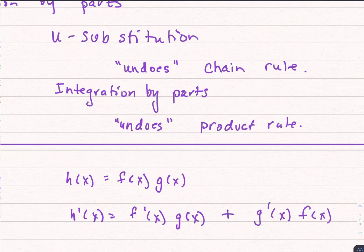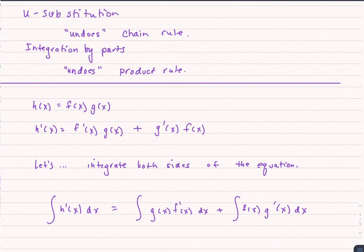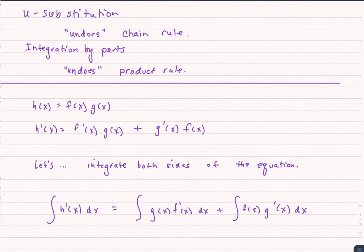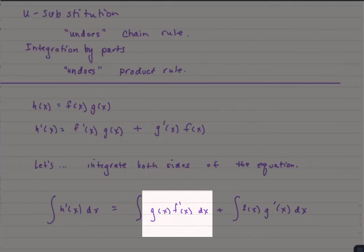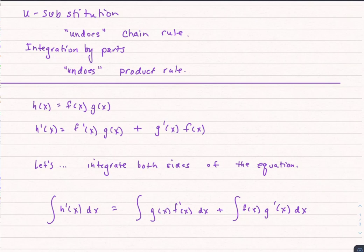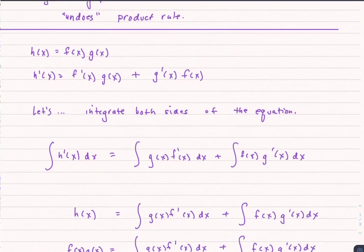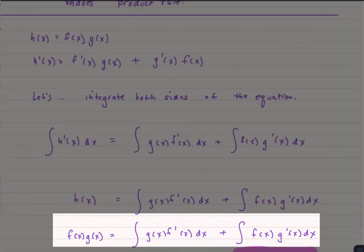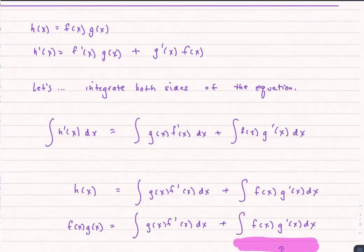Let's do something strange. Let's integrate both sides. So if I integrate h'(x), I've got that, and then I'm going to have the integral of g(x) f'(x) dx and the integral of f(x) g'(x) dx. Notice I swapped the order. I put the derivative second in the product for both of those terms. The integral of h'(x) dx is just the function, so that's simply equal to h(x). I can rewrite h(x) as f(x) times g(x), because that's how we've defined it.